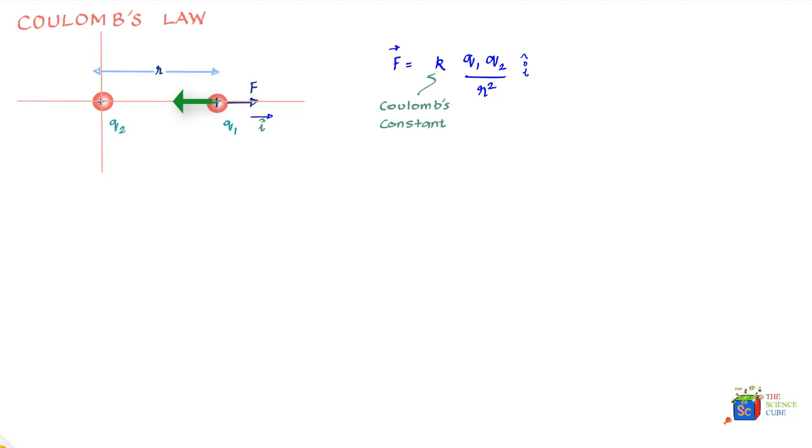If q2 was anywhere else on the xy plane, then we would have put r instead of i. So let us say q1 is over here, then the force on it would have been in this direction, readily starting from q2 towards q1. We would have said that the direction of this force can be represented by multiplying the magnitude of this force.